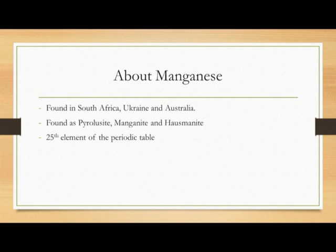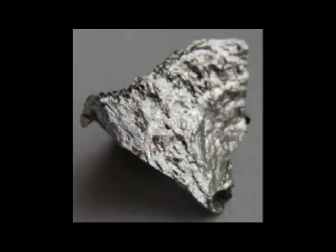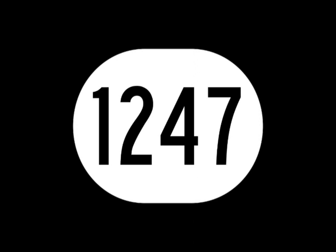Manganese is the 25th element of the periodic table with 25 electrons, 25 protons and 30 neutrons. It is a pinkish grey brittle metal that has a high boiling point of 1247 degrees but easily oxidizes, which means rusts.